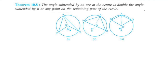The angle subtended by an arc at the center is double the angle subtended by it at any point on the remaining part of the circle. If you have a figure, the angle subtended by arc PQ at the center is the sub-tended angle.